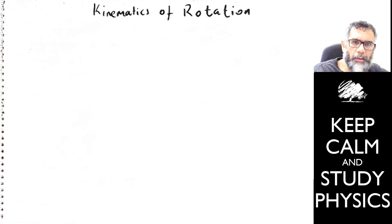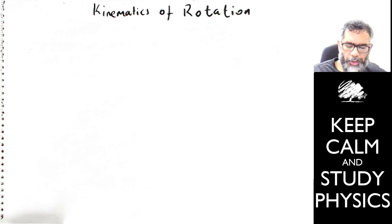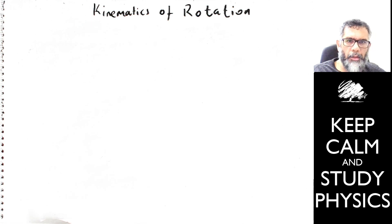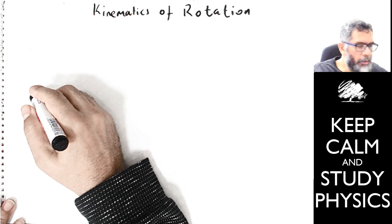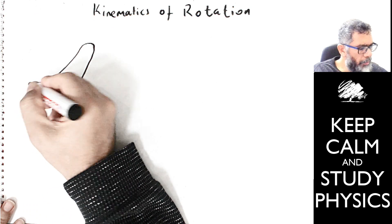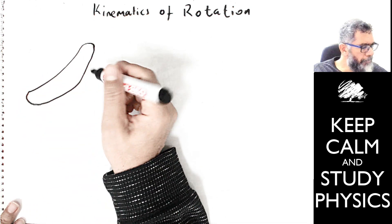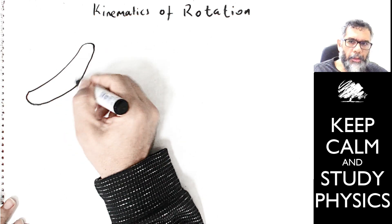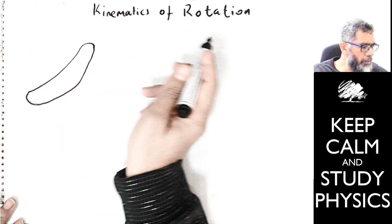In this lecture I will talk about the rotation of rigid bodies and some kinematical quantities related with this. So far we have dealt with only objects which are supposed to be point particles, but now we are going to deal with objects like this shape. We are dealing with not the translation of this object in some direction.